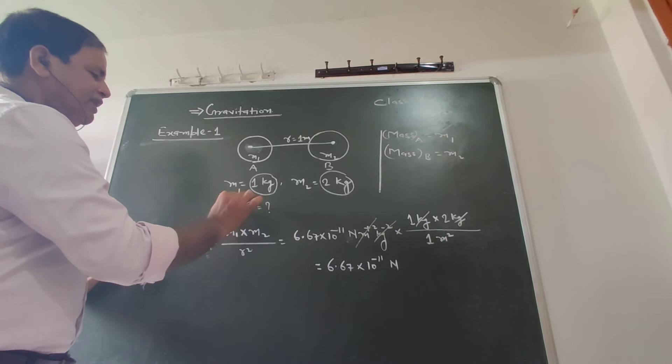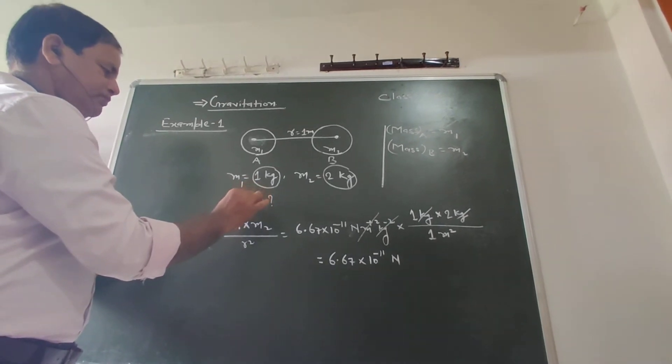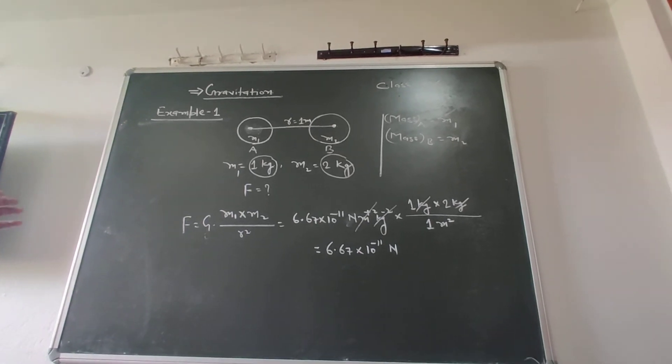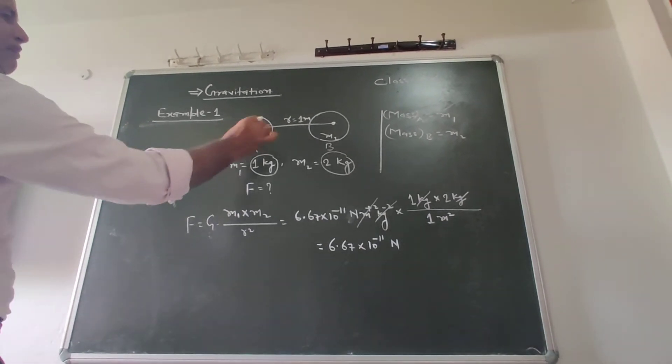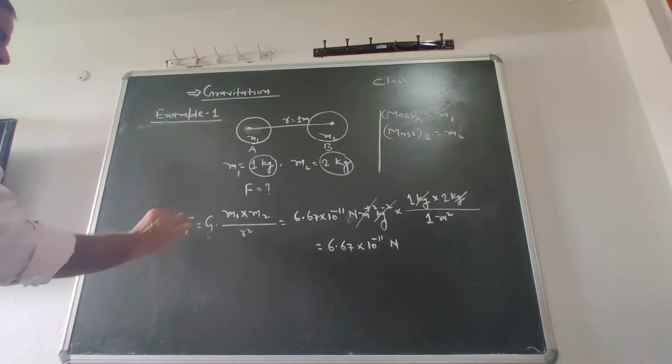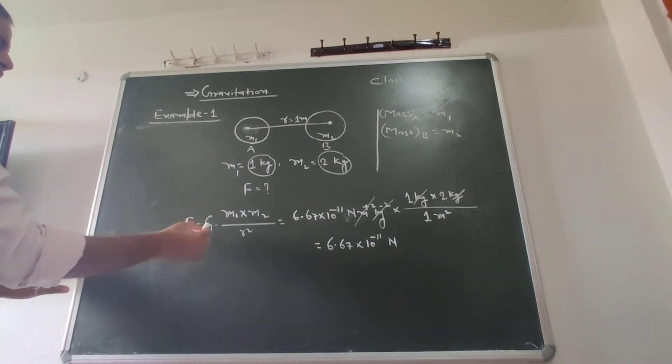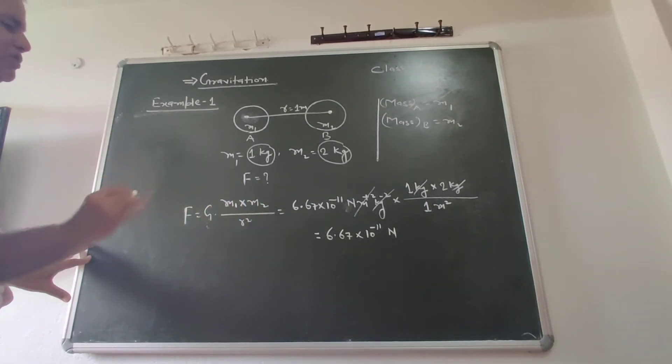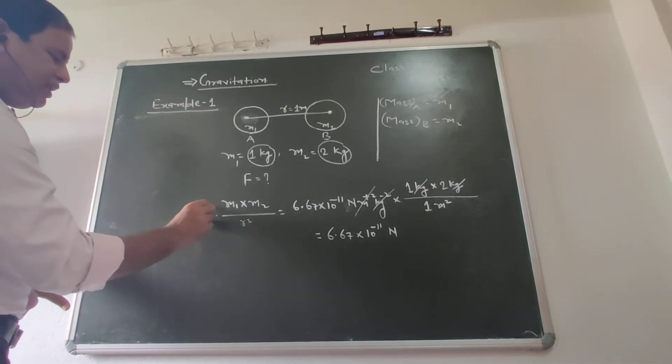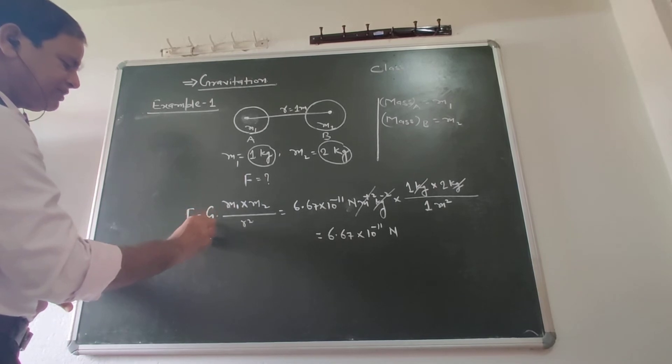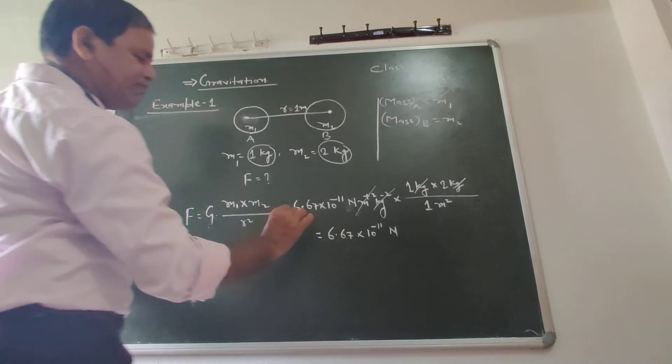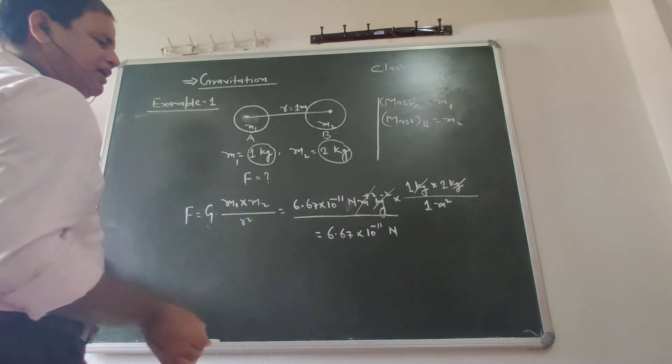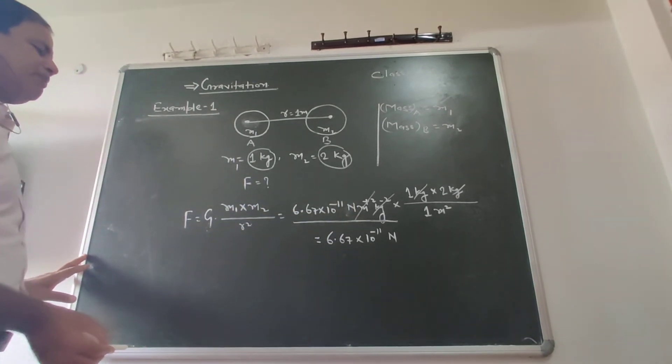According to Newton's universal law of gravitation, this force of gravity is equal to G times M1 times M2 divided by R squared. Capital G is the universal gravitational constant, which has the value of 6.67 times 10 to the power minus 11 Newton meter squared per kilogram squared.